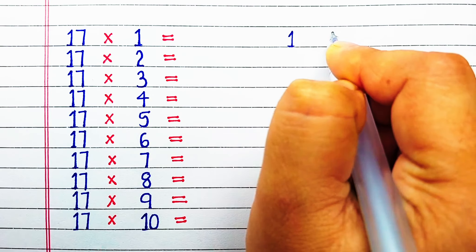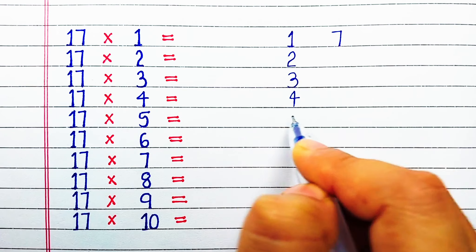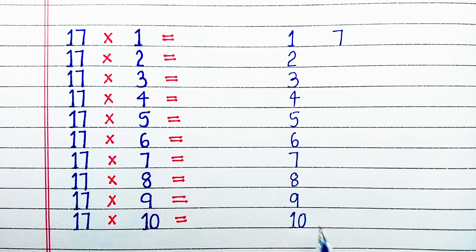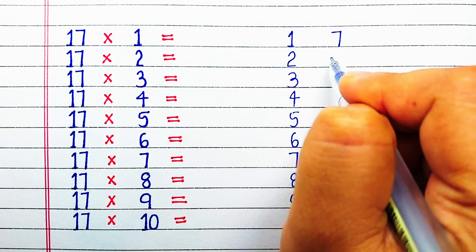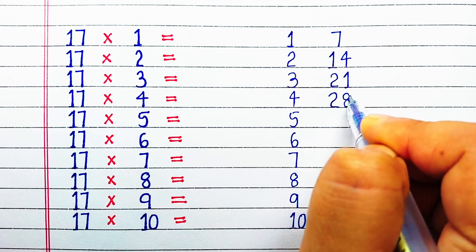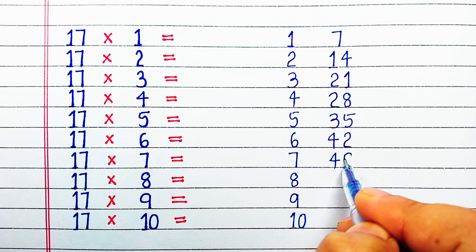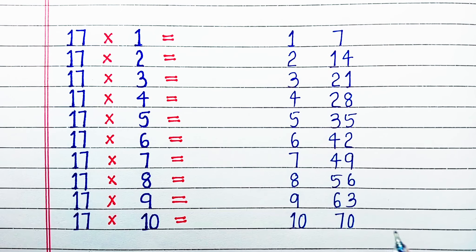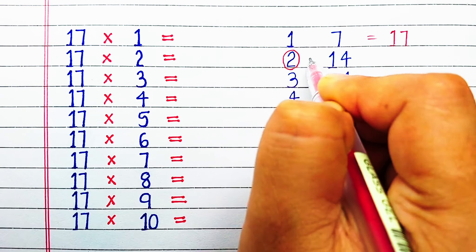Next let's learn the trick for the table of 17. Like the last table, we will write the table of 1 on the left. Then we will write the table of 7 on the right — the link for that video is in the description box. Table of 7: 7×1=7, 7×2=14, 7×3=21, 7×4=28, 7×5=35, 7×6=42, 7×7=49, 7×8=56, 7×9=63, 7×10=70. Now we will combine both numbers as we had done before, so 1 and 7 give 17.